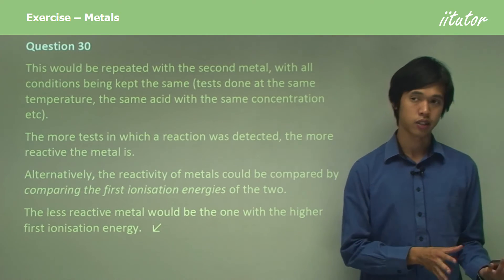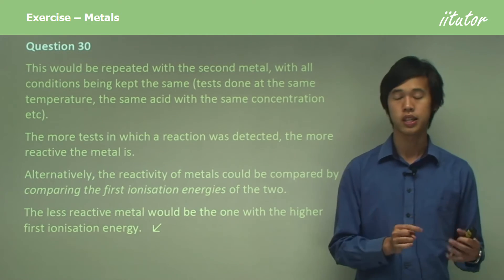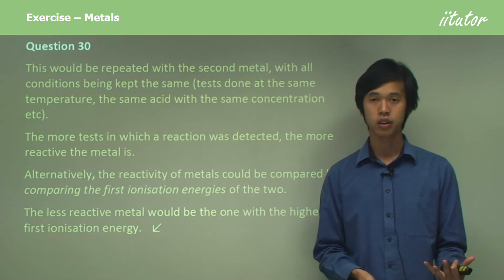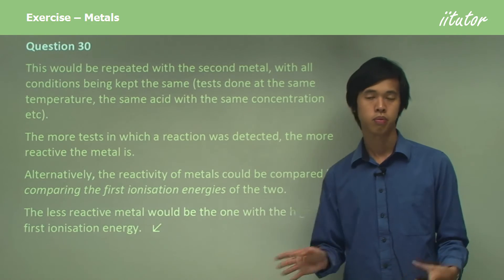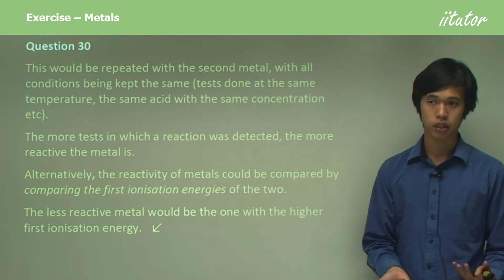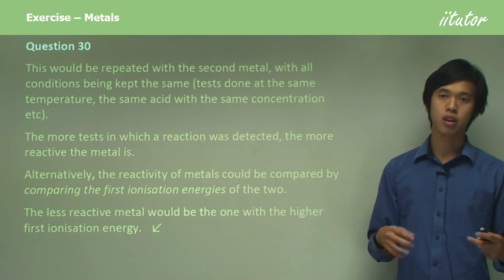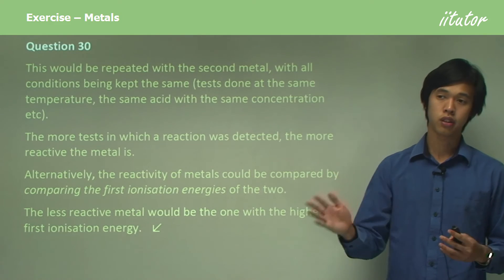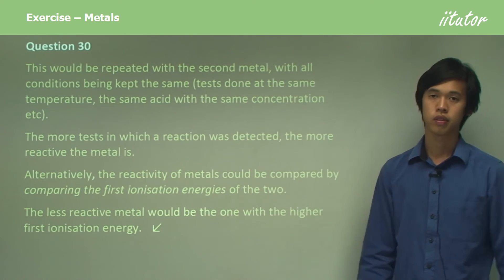The one with the lower ionization energy would take a lot less energy to remove that electron and become an ion because it's a metal. So it means that metal will be more reactive because it will be easier and there'll be more opportunities for it to remove that electron than the less reactive metal.